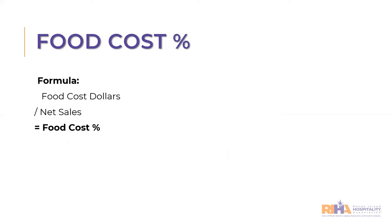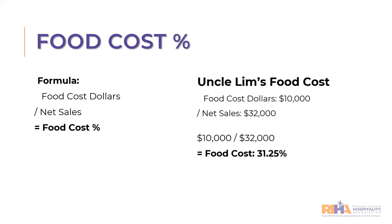In order to calculate your food cost percentage, you must know your net sales. Take your food cost dollars, which we just calculated, and divide it by net sales — not gross sales. Make sure to use your net sales. Using the last example, Uncle Lim's food cost dollars were $10,000 divided by net sales of $32,000, giving a total food cost percentage of 31.25%.